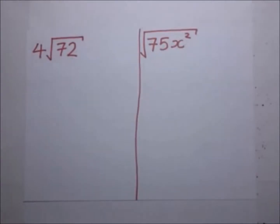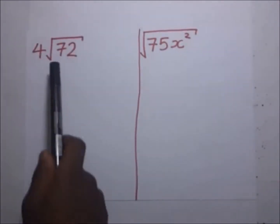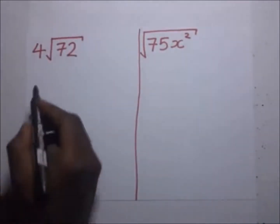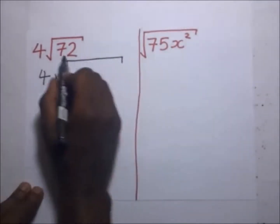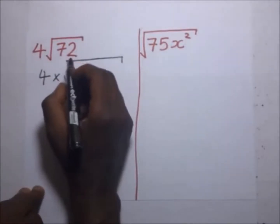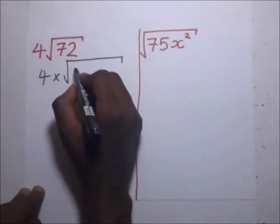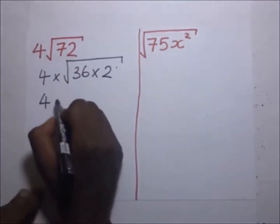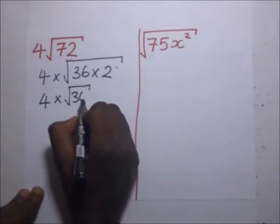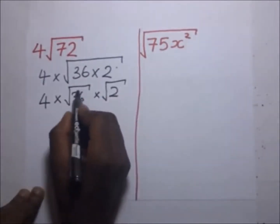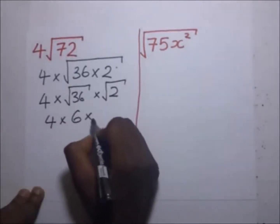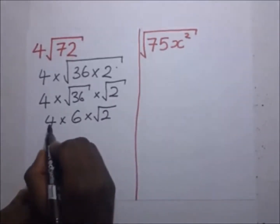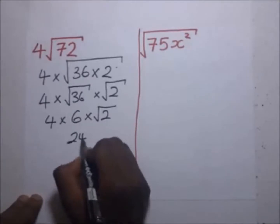Perfect squares include 1, 4, 9, 16, 25, and so on. Since 72 can still be simplified, we write it as 4 times the square root of 36 times 2. This becomes 4 times the square root of 36 times the square root of 2. The square root of 36 is 6, so it's 4 times 6 times the square root of 2, which equals 24√2.